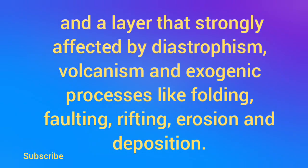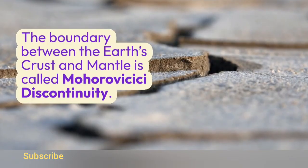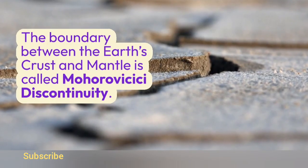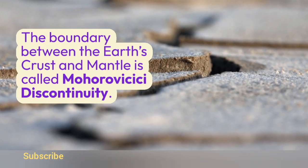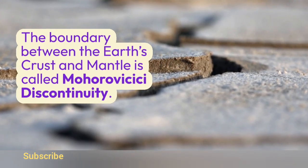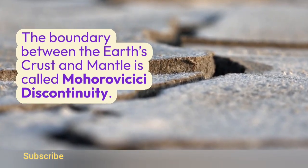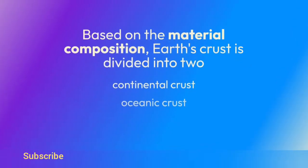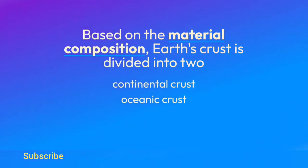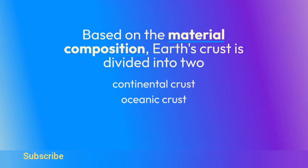The crust is a layer strongly affected by diastrophism, volcanism, and exogenic processes like folding, faulting, rifting, erosion, and deposition. The boundary between the Earth's crust and mantle is called the Mohorovičić discontinuity. Based on material composition, Earth's crust is divided into two types: continental crust and oceanic crust.